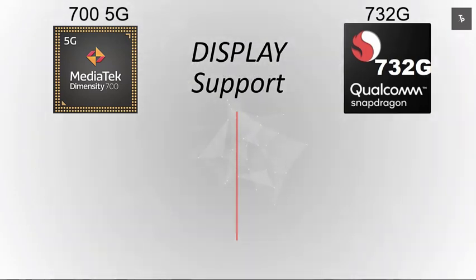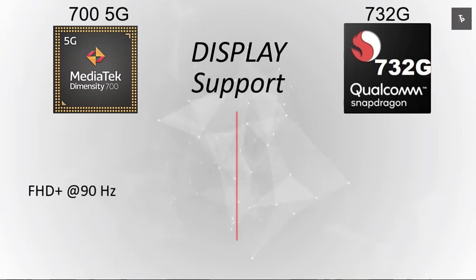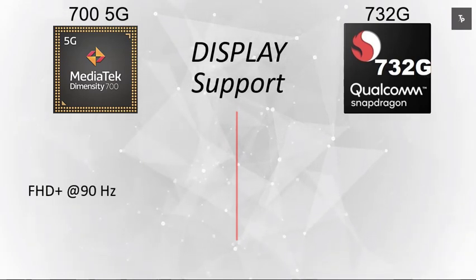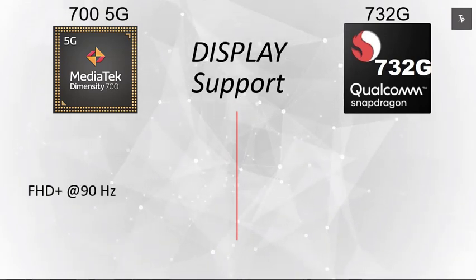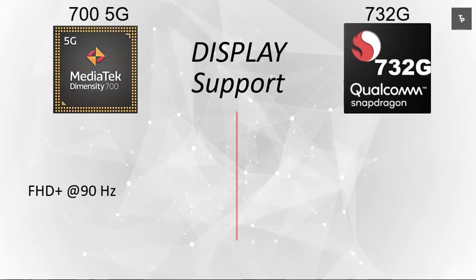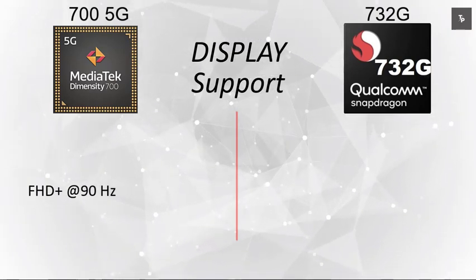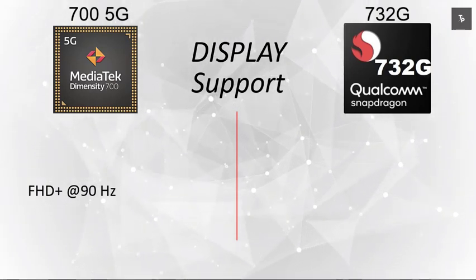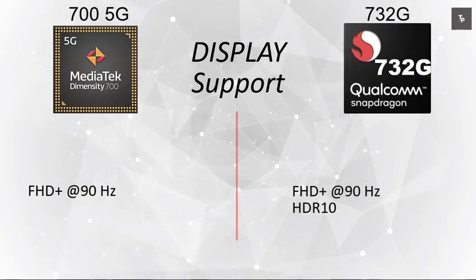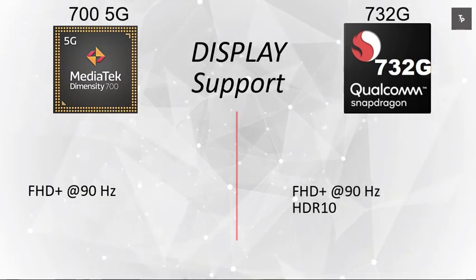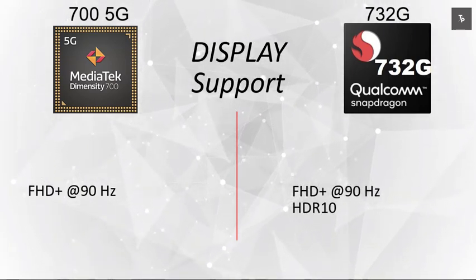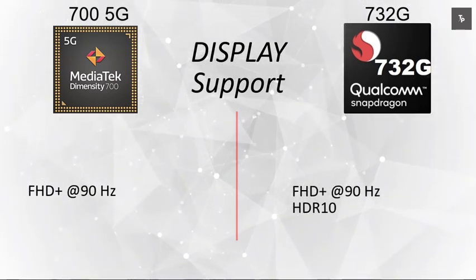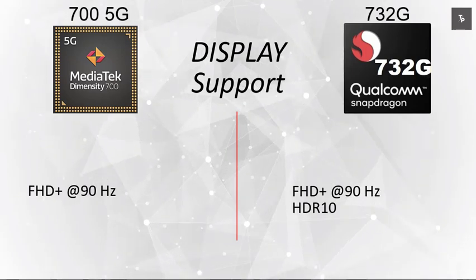Next is display resolution support. For the MediaTek Dimensity 700, it supports FHD+ at a maximum of 90Hz. The Snapdragon 732G also supports FHD+ at 90Hz, but additionally offers HDR10+ content support.